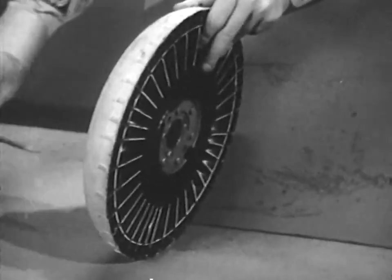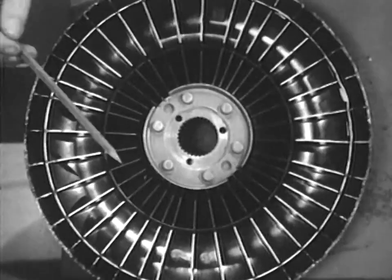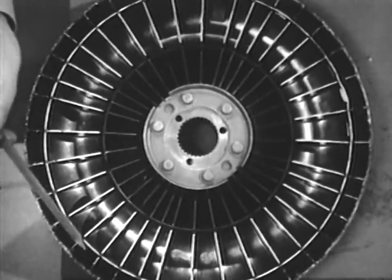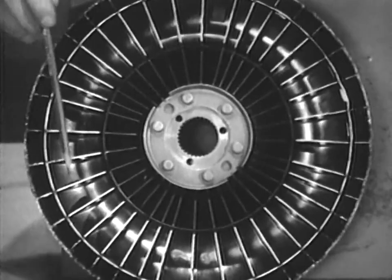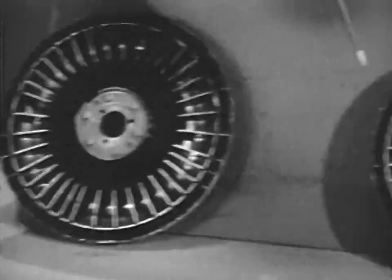And this is the driven member, which connects to the drive wheels. It's called the turbine and is constructed almost identically to the pump, including the straight radial veins and the guide ring, which better directs the oil back to the pump.